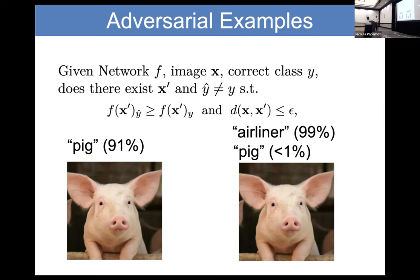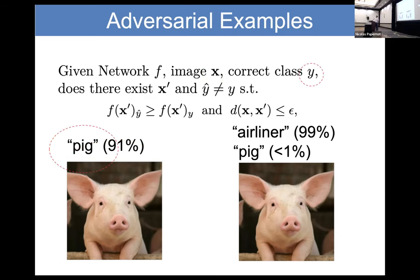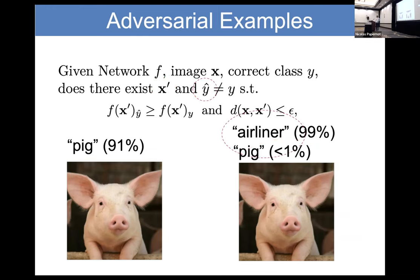Our actual formulation: given a neural network f, a training image, the correct class, the question is — is there a different image x' and a different class such that the neural network assigns a higher score to the incorrect class than it does to the true class?